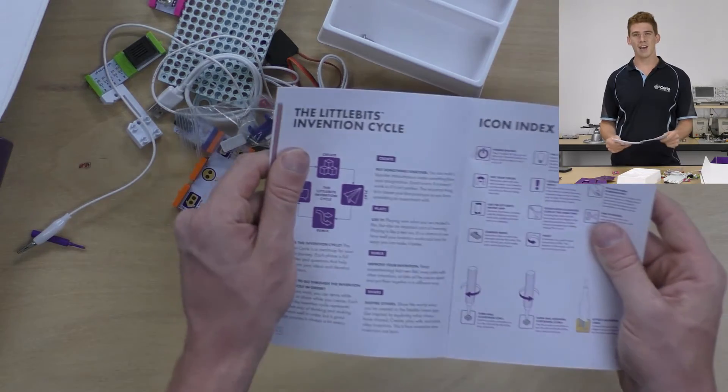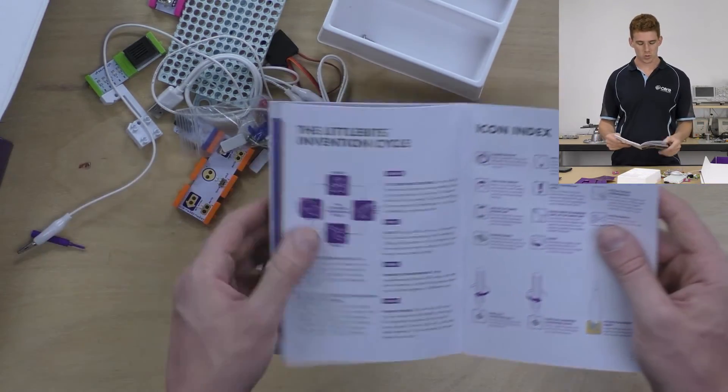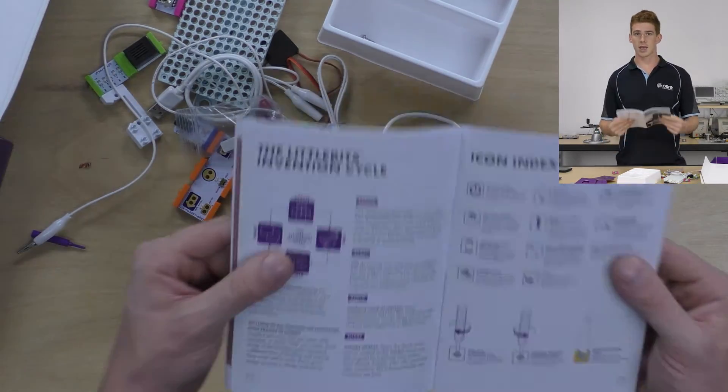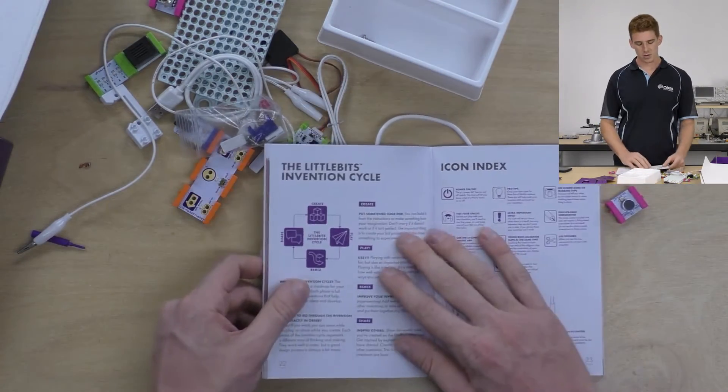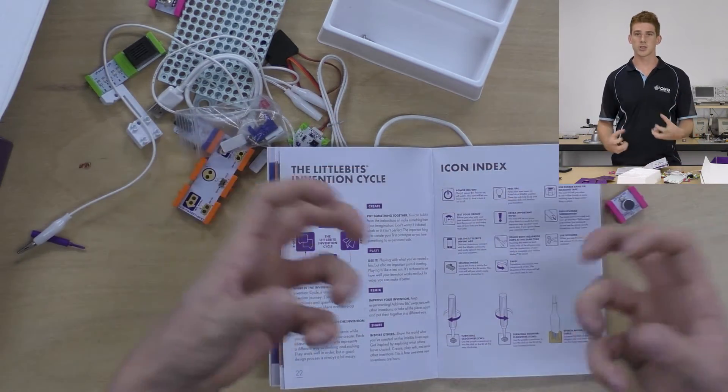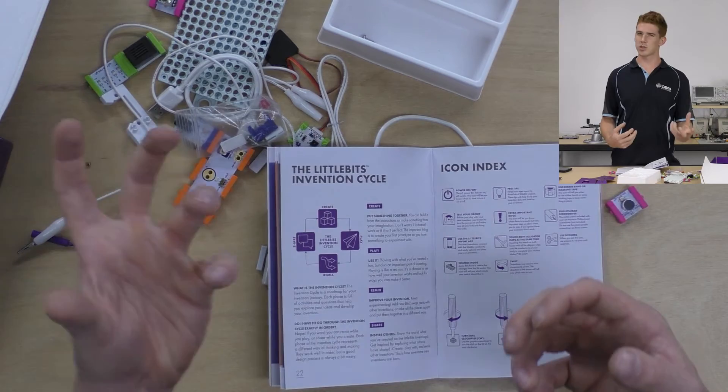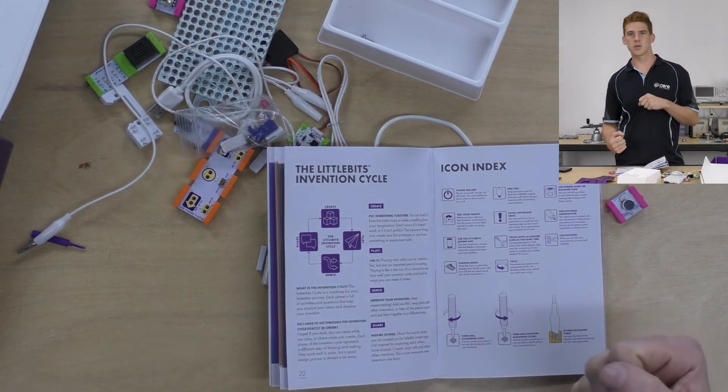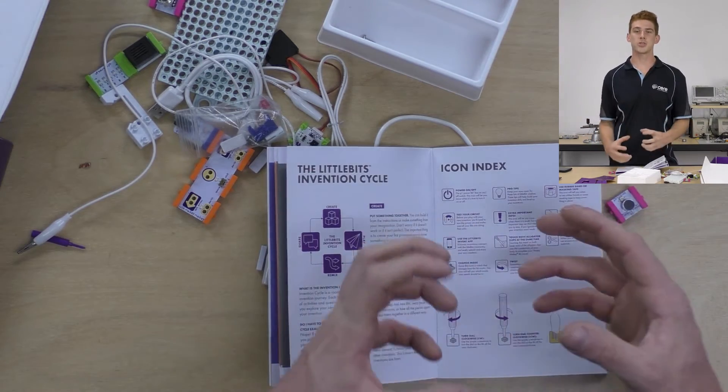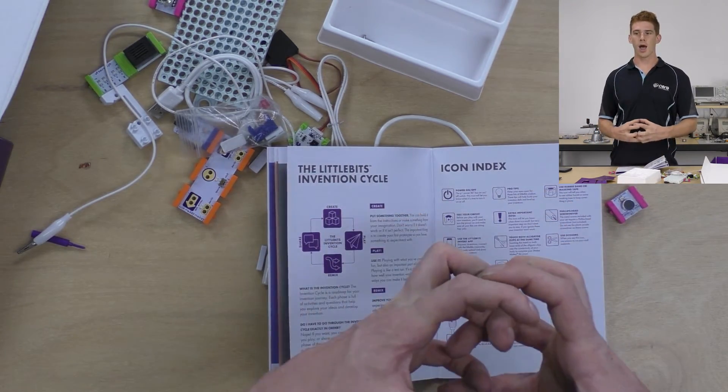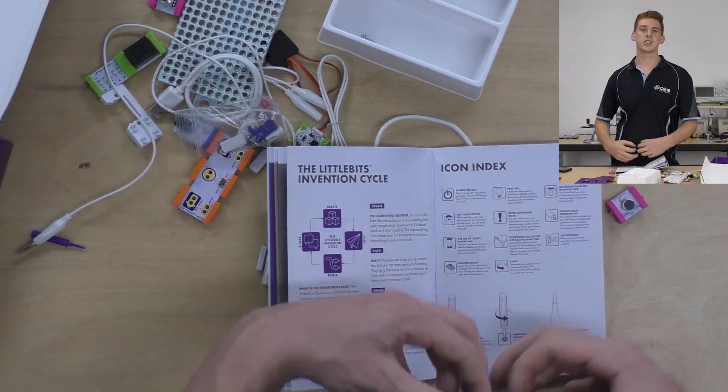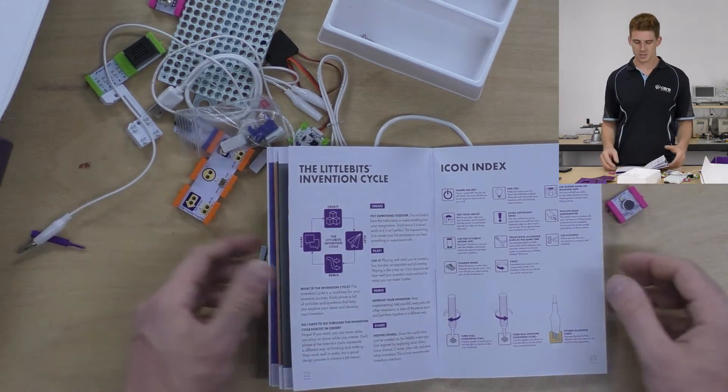Following that point, we have a Little Bits Invention cycle. Now, that's a cool thing that Little Bits do. They've always done it. It's a really good way to teach children Little Bits and students Little Bits. So, the idea is that you create something, so you just put it together on the desk, then you play with it. So, you see if it's doing what you wanted it to do, and you find the strengths and weaknesses of your invention out. You then remix it. So, if there's anything that you want to add or change about your invention, that's when you do it. You do that until you're happy, essentially. Once you've remixed it enough, you'll be happy with your invention. You can share it with the community, and it's simply awesome.